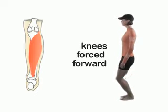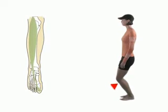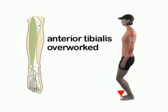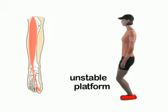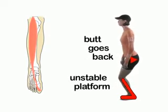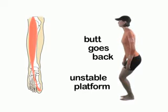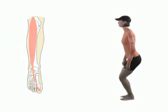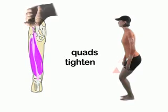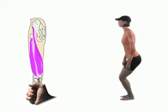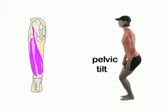Once the knees go forward, the anterior tibialis — the muscle on the front of the leg and the shin — is going to become overworked, giving you an unstable platform for the knee and forcing the butt to go back. As the butt goes back, the quads are going to become tight. And as they grow tight, they're going to pull from the patella and ultimately pull down on the pelvis, forcing that pelvic tilt to occur even more dramatically.